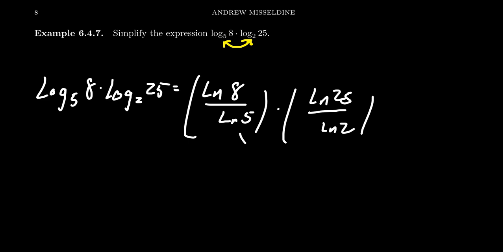And then what you can do is then, since this is multiplication, you can swap locations. So you're going to get the natural log of 8 over the natural log of 2. And then you're going to times that by the natural log of 25 over the natural log of 5, like so.